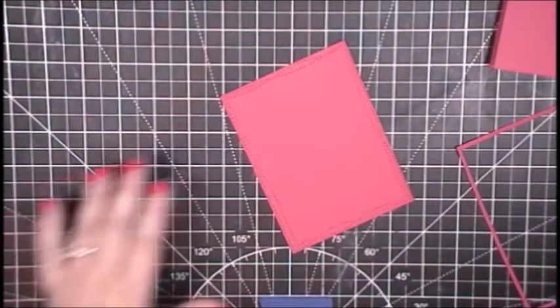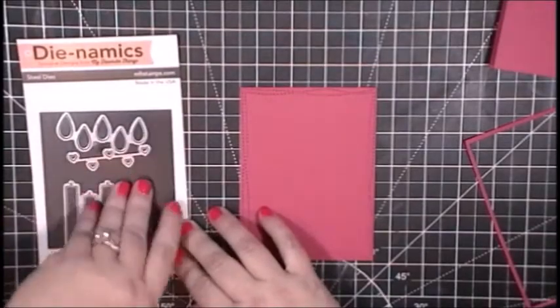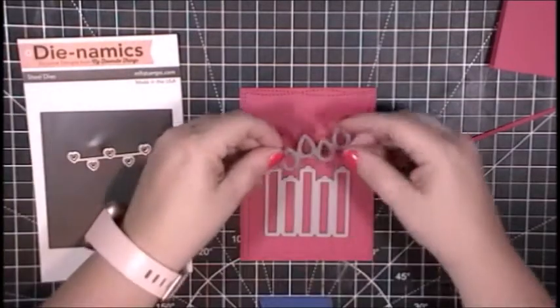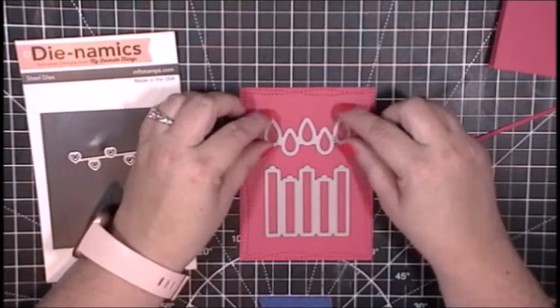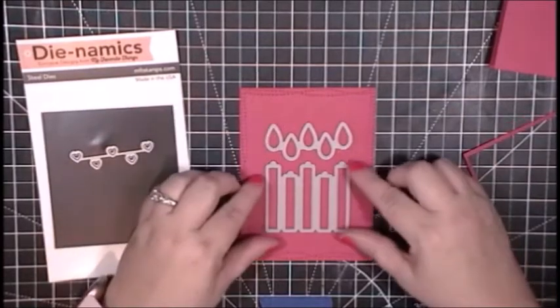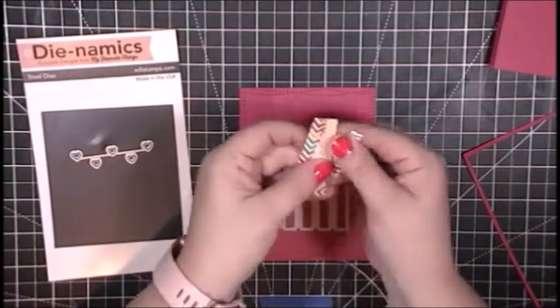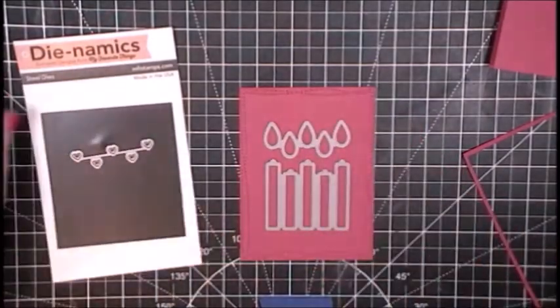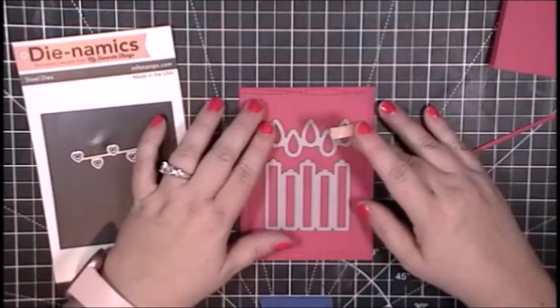So now that I have my card panel trimmed down and the stitching added, I am going to go ahead and figure out where to place the flame die. So in the pouch where I keep this die set, I already have a whole bunch of candles that I cut out of pattern paper for another project many moons ago, and they perfectly coordinated with the cardstock that I chose. So all I need to cut is the flames.